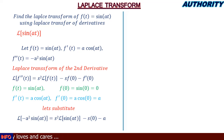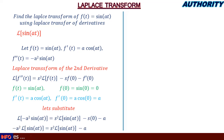In the first term we bring out −a²: −a²·L{sin(at)} = s²·L{sin(at)} − a.